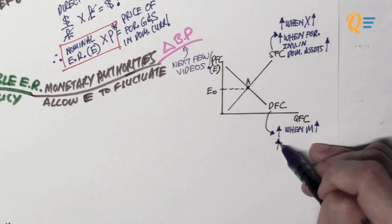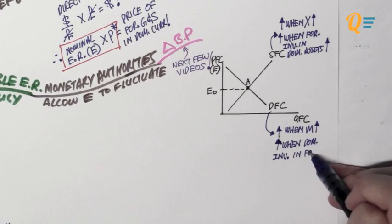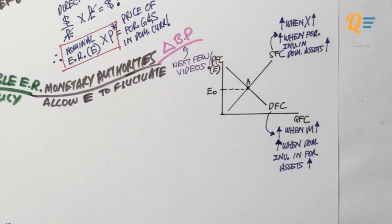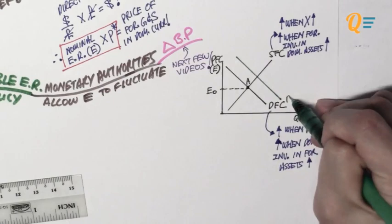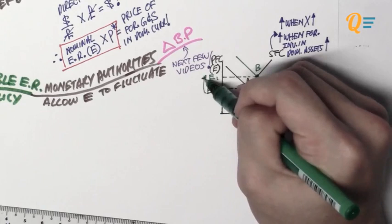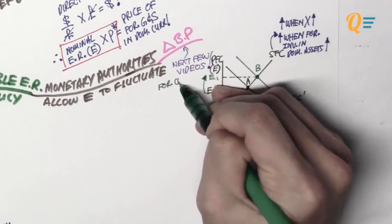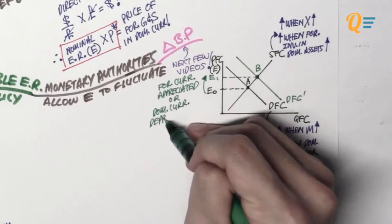The demand for foreign currency is also going to increase when there is more domestic investment in foreign assets, because those assets are priced in terms of foreign currency. So we need to go to the forex market and ask for foreign currency, and in return give our domestic currency, so that we can invest in those foreign assets. Let's assume the demand curve shifts to the right, bringing us to equilibrium at point B with a new nominal exchange rate of E1. The price of foreign currency has increased — the foreign currency has appreciated, or we say the domestic currency has depreciated.